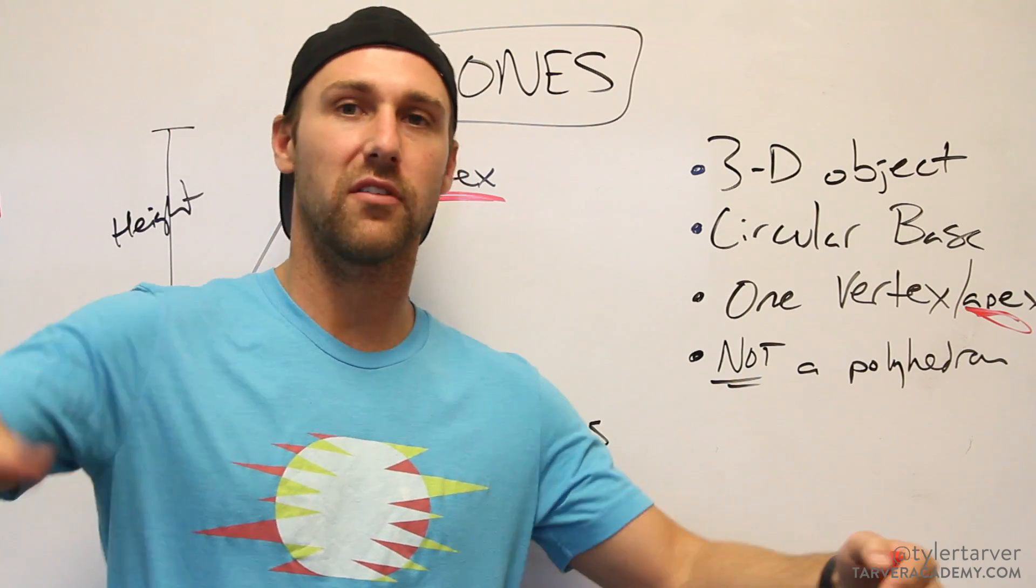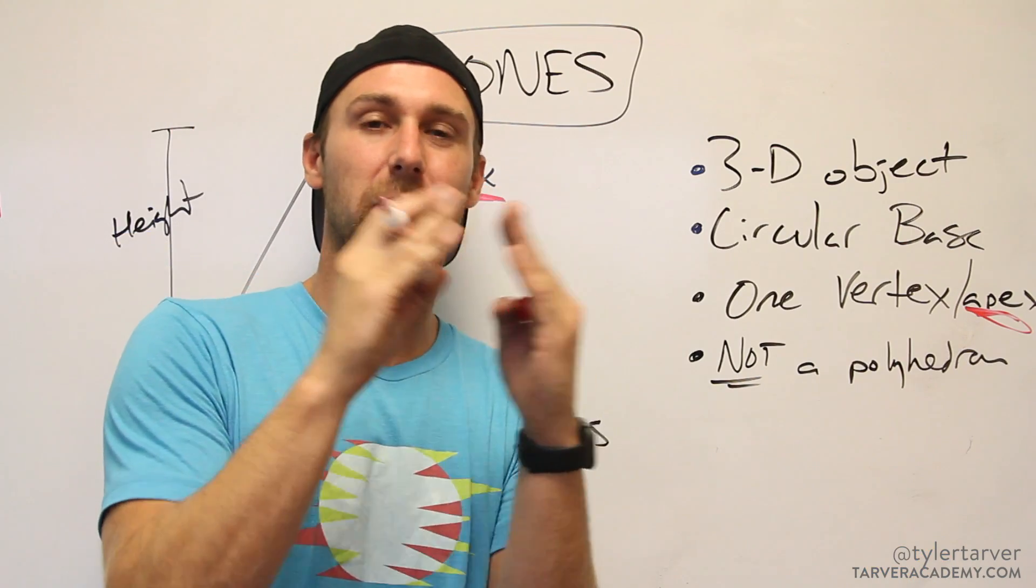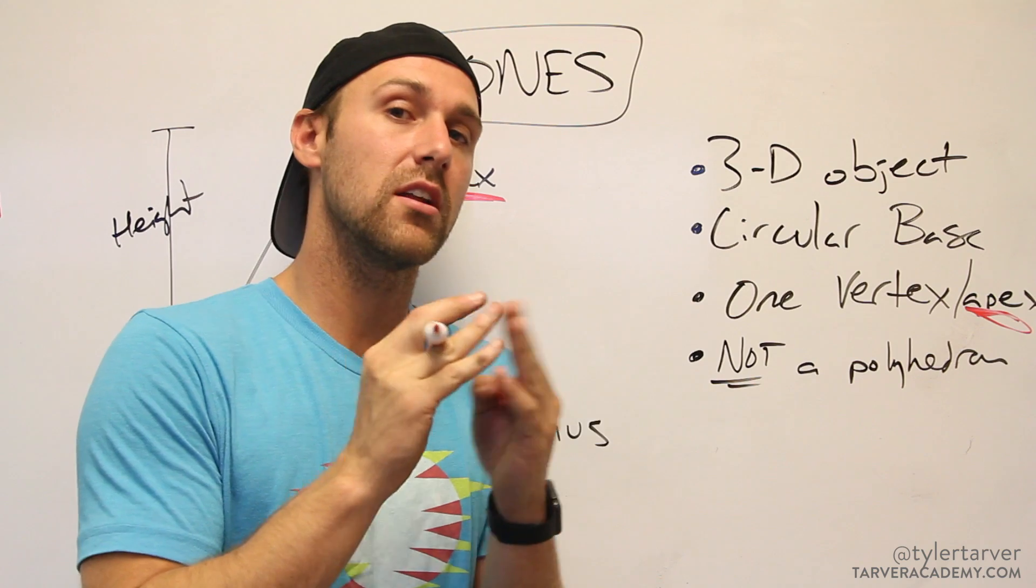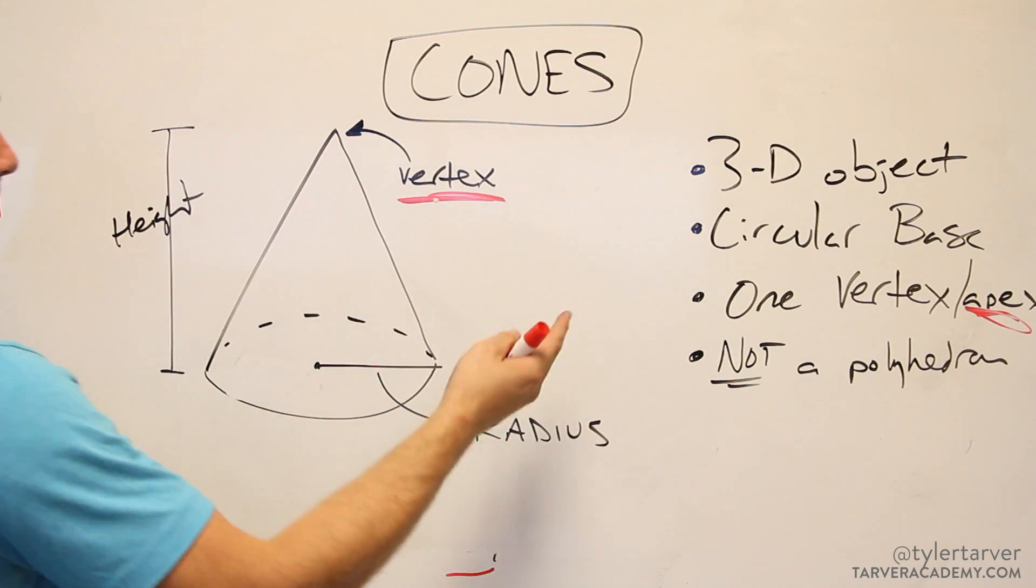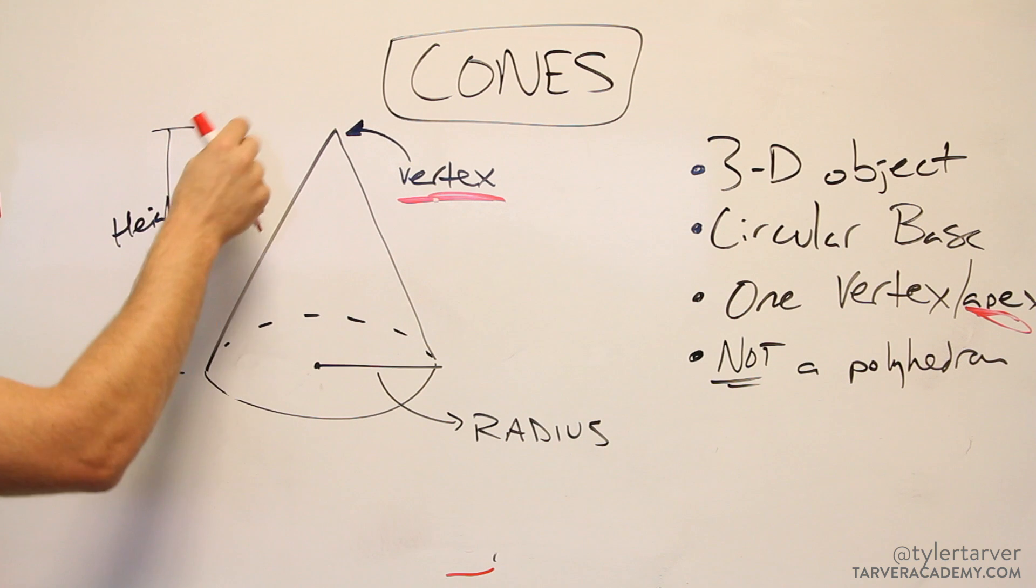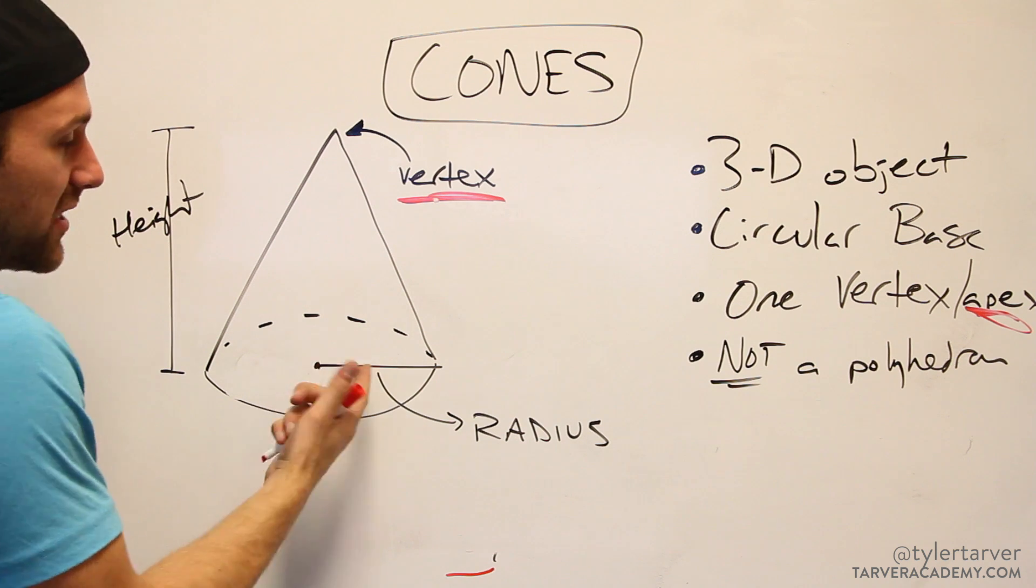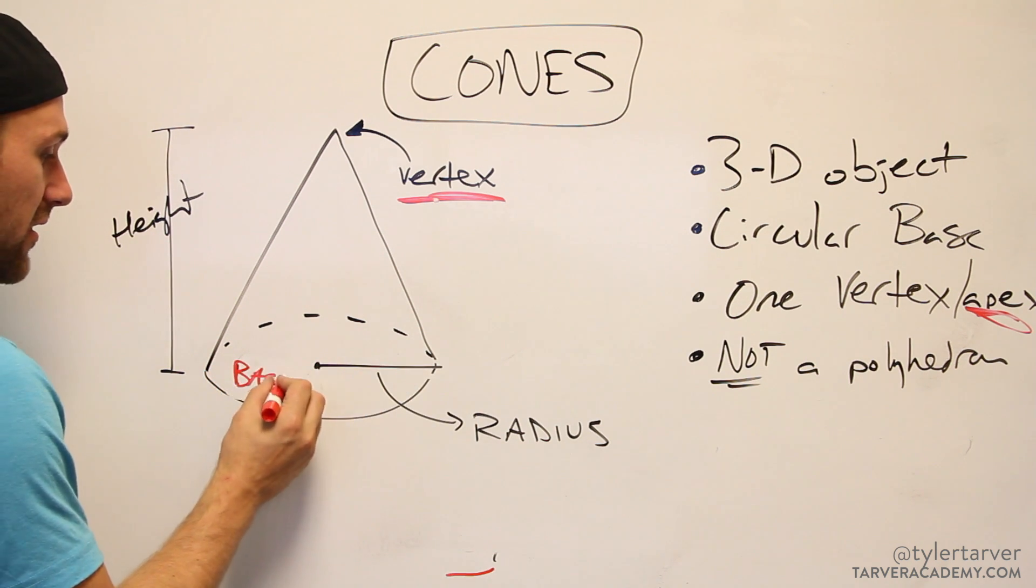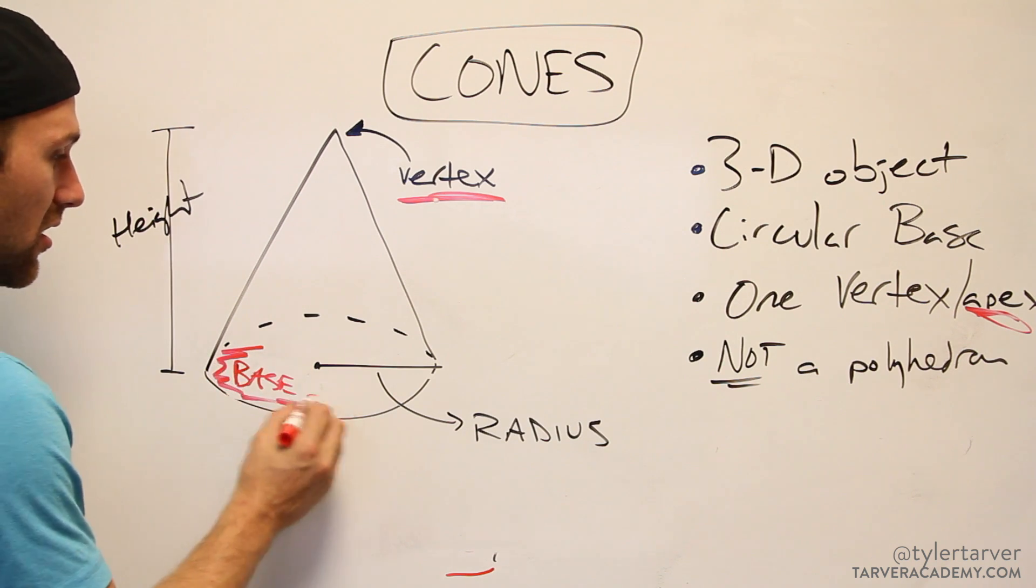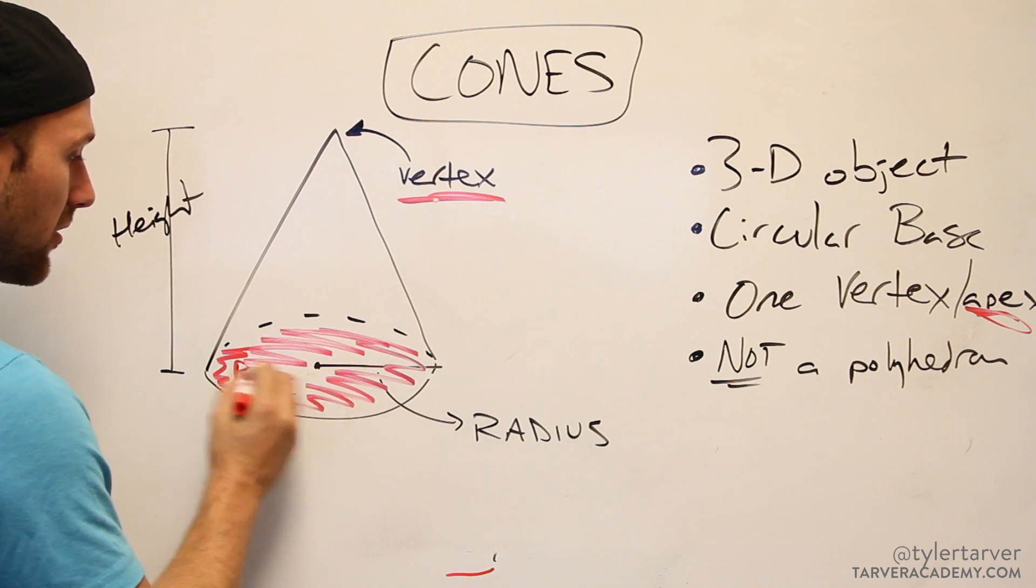It's also called your apex. So vertex, apex, whatever, that's the top point. Think of a mountain, if a mountain was perfectly circular and it came up to a point, you talk about the apex of a mountain, that would be a cone. Now other important terms within a cone: height goes from the apex or the vertex down to the base. That's the height. Radius, that's just, I mean it's a circle so the radius is what it is, and then your base is that circle down there.